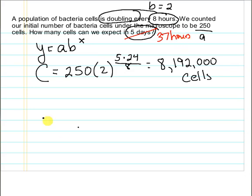Our formula will still work for that. We've got C equals 250 times 2. Now we need to figure out the number of times we've doubled, so it's 37 divided by 8.